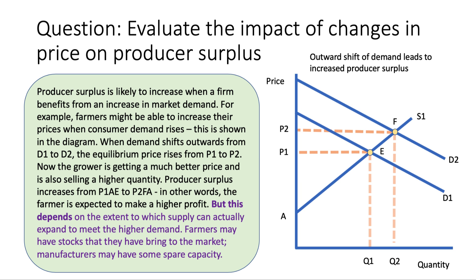Here's a third scenario where the producer does benefit. Let's consider what happens when there's an increase in market demand. For example, you might be an avocado farmer and there's a global increase in demand for avocados driven by healthy eating — that means the market price goes up. Farmers may be able to increase their prices when consumer demand rises, shown in the diagram as a shift from D1 to D2. The farmer is not only getting a better price but is also selling a higher quantity, so producer surplus rises from P1EA to P2FA.